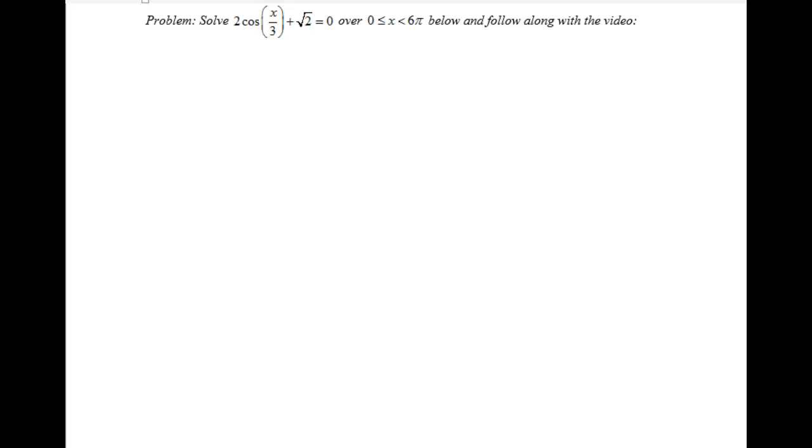Hi Pre-Calc, it's Mr. Thompson here. We're going to solve this ugly trig equation and it's going to be awesome. We have 2 cosine of x over 3, and I notice the period change, plus root 2 equals 0 over this domain.